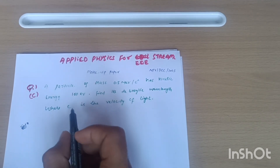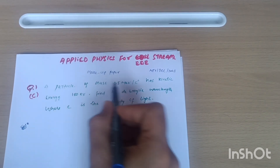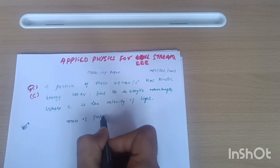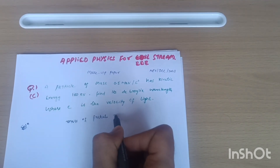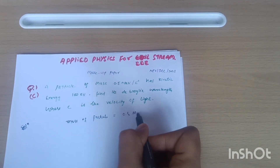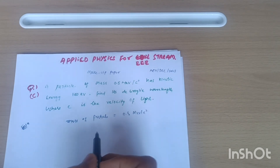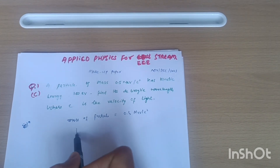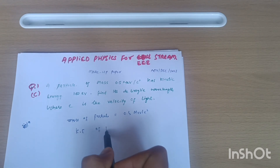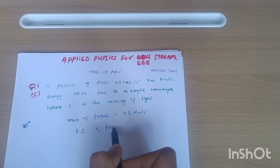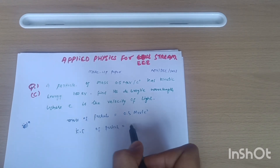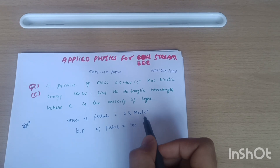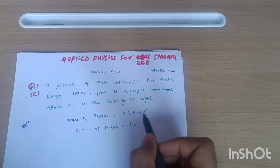First of all, let me write down the given data. Mass of particle is 0.5 mega electron volt per c squared. Next, kinetic energy of particle is 100 electron volt. If we need to work in SI units, we usually take energy in joules.